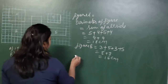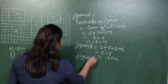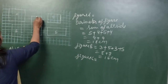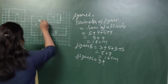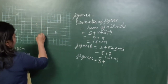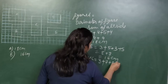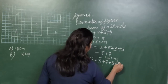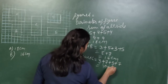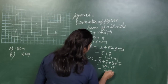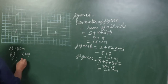Now figure C. The breadth is 3 and the length is 7. Same approach: 7 + 3 = 10, and 7 + 3 = 10, giving 10 + 10 = 20 centimetres. The perimeter of figure C is 20 centimetres.